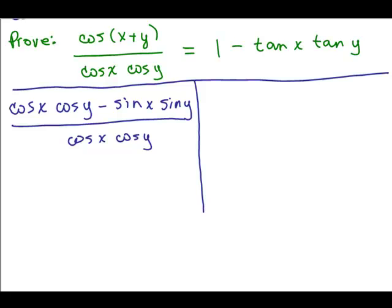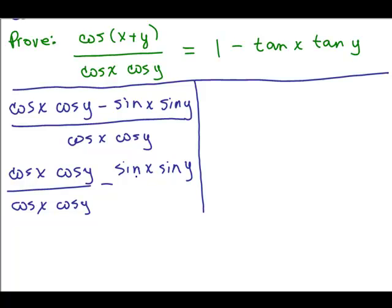All right, now what we have is a difference in the numerator over one term in the denominator, so we could split the numerator up and that'll give me cosine X cosine Y over cosine X cosine Y minus sine X sine Y over cosine X cosine Y.